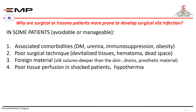Poor tissue perfusion in shock, hypothermia, and poor tissue oxygenation all compromise the local tissue ability to resist bacterial invasion. Monitor patients to avoid hypotension, ensure proper oxygenation during operation and in the recovery room, and avoid hypothermia. This is especially important in children and the elderly.